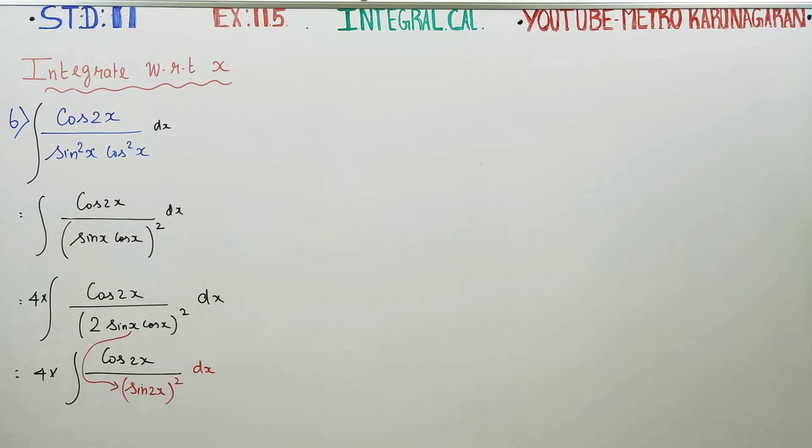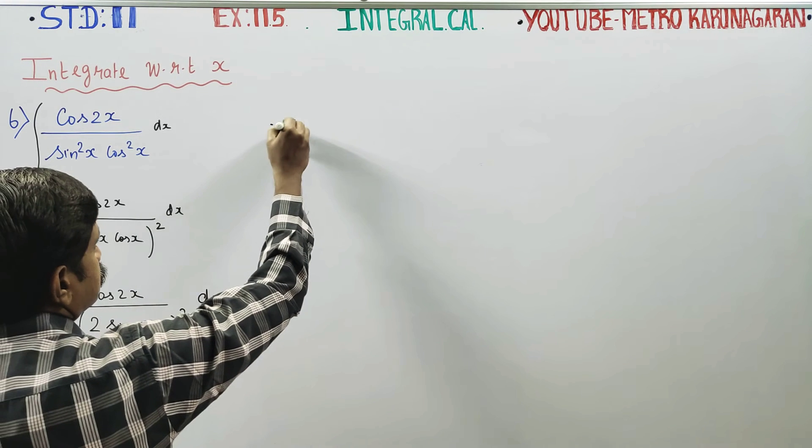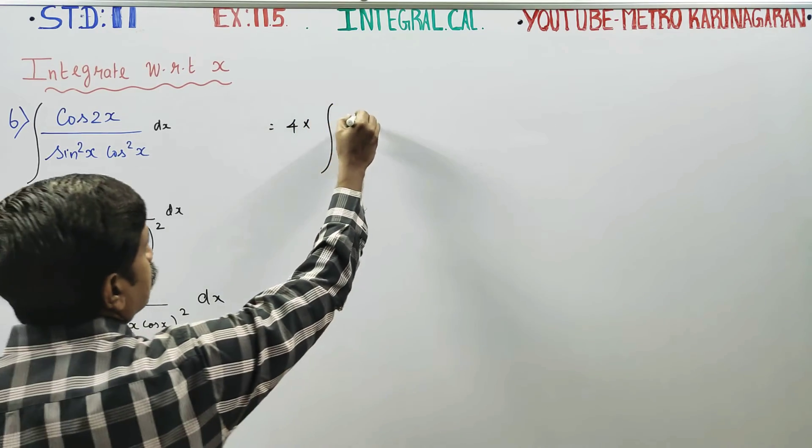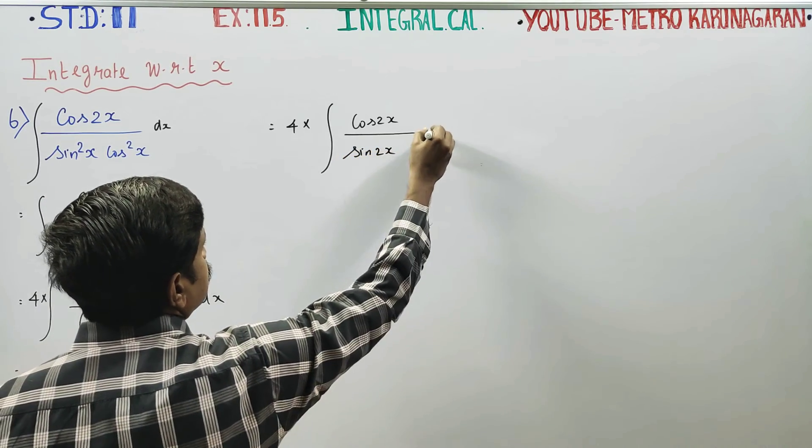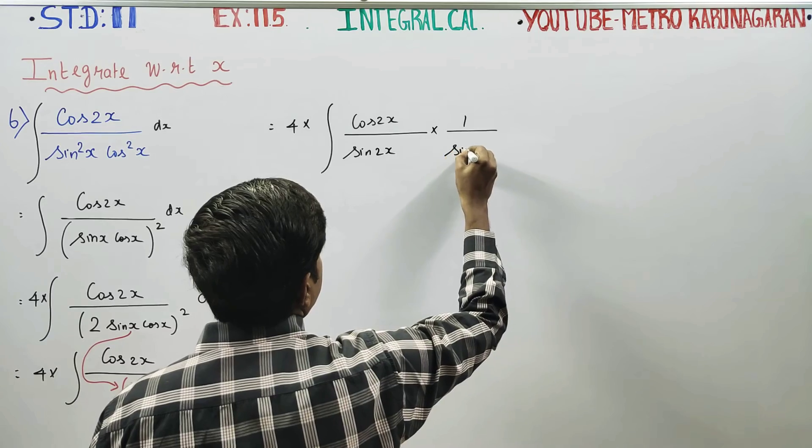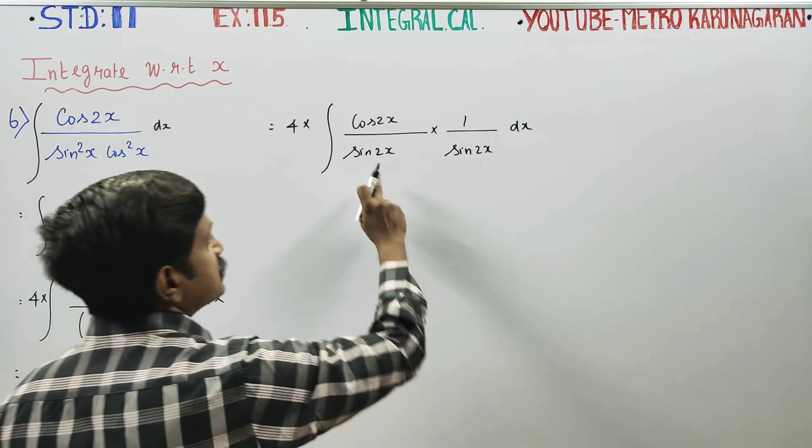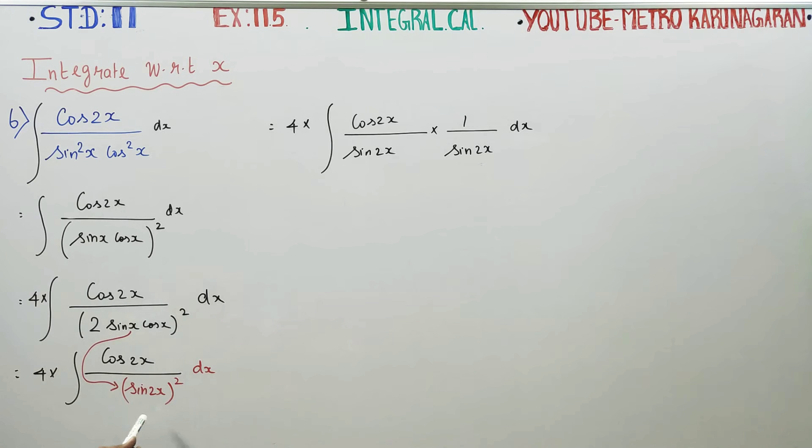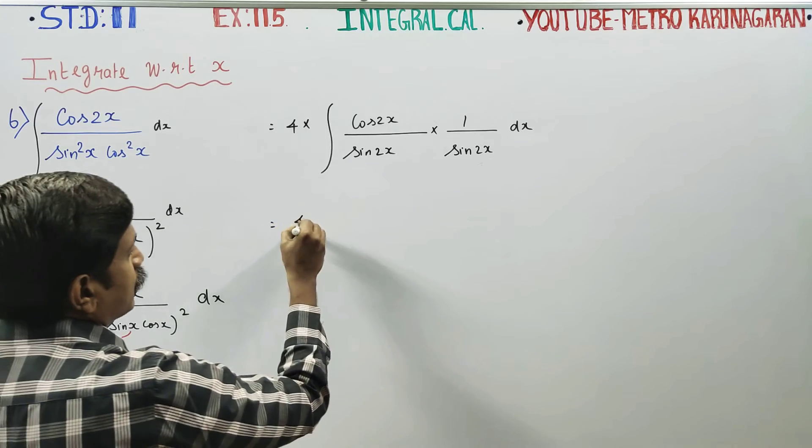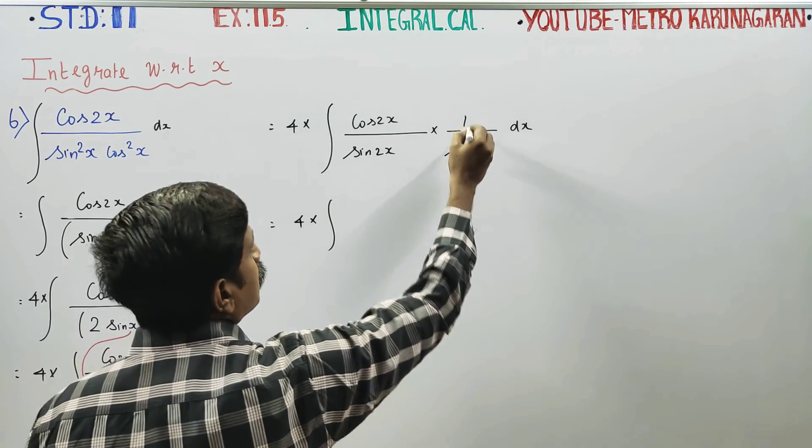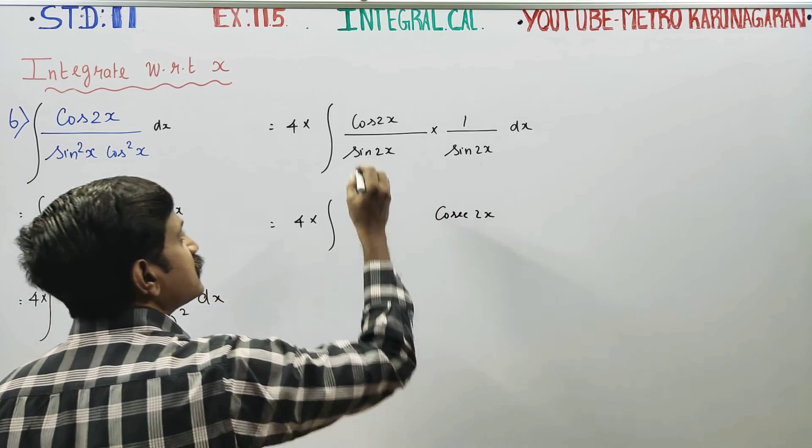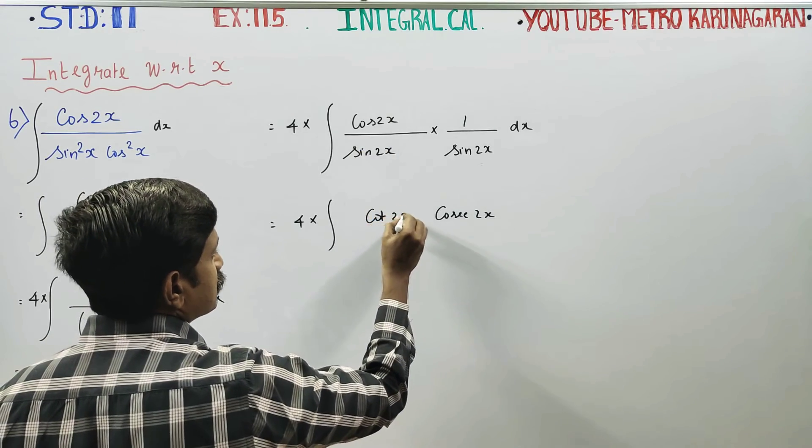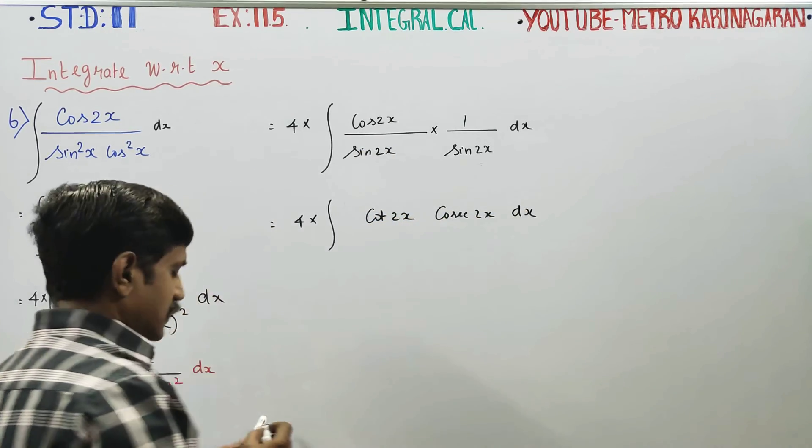Next stage: 4 into integration cos 2x by sin 2x into 1 by sin 2x dx. Sin square is sin 2x squared, that is why we split it. This gives us 4 into integration cosecant 2x cot 2x dx.